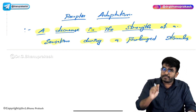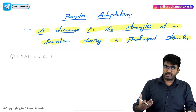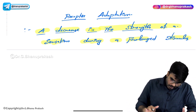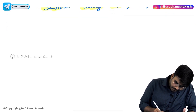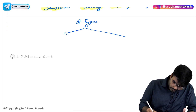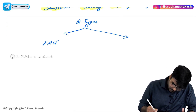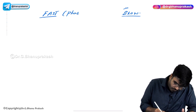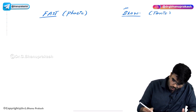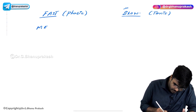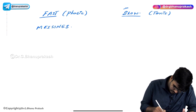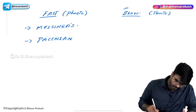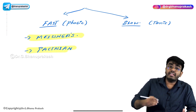Based on this, receptor adaptation is of two types. Receptors that are fast adapting are also called phasic receptors, and receptors that are slow adapting are also called tonic receptors. Examples of phasic receptors are Meissner's corpuscles and Pacinian corpuscles — they adapt very quickly.